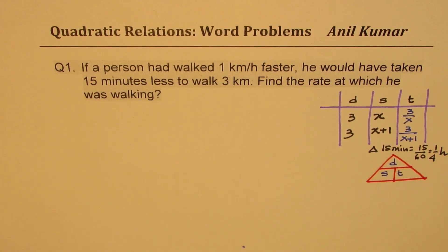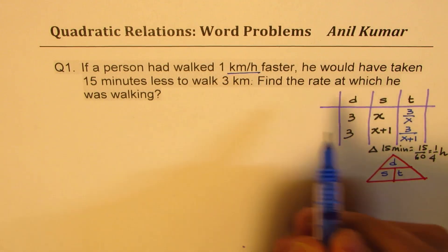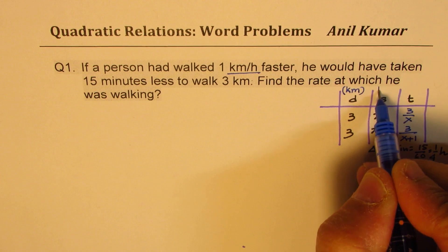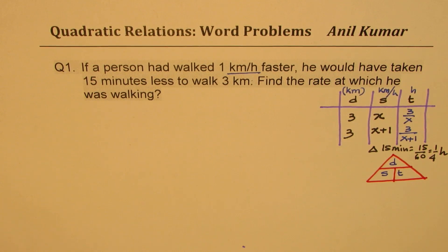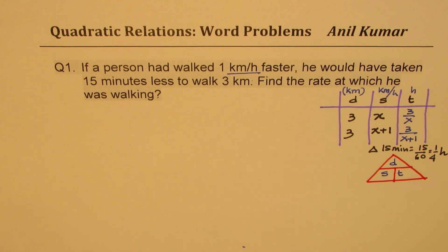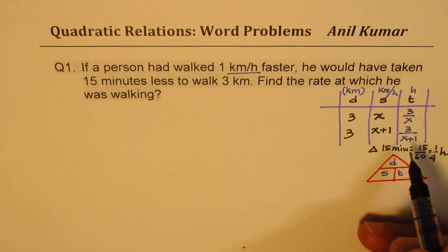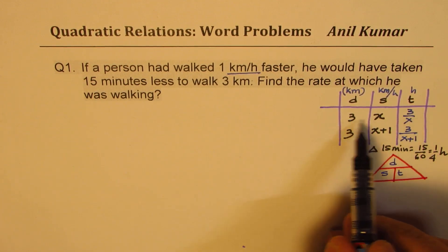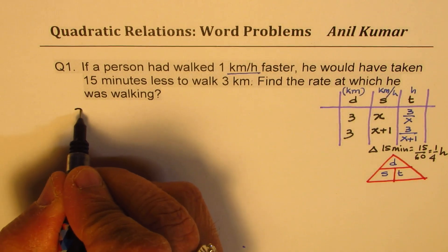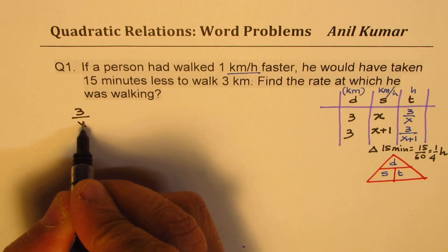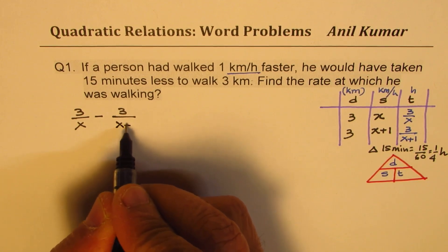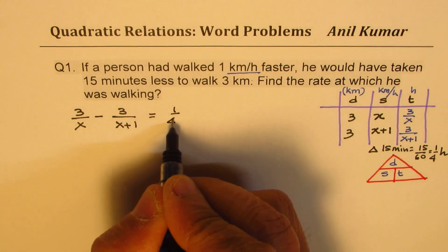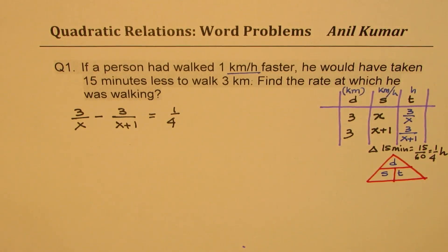Now it's a simple equation. The difference of these two times: the slower speed gives more time, so 3/X minus 3/(X+1) equals 1/4. To solve, multiply each term by the common denominator 4X(X+1) to get rid of fractions. The first term becomes 3 × 4 × (X+1) and the second term becomes 3 × 4 × X, while the right side becomes X(X+1).